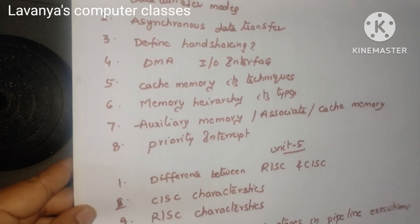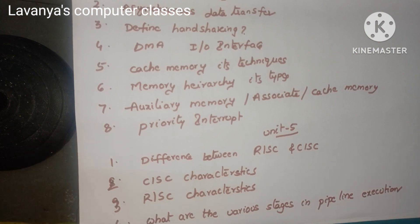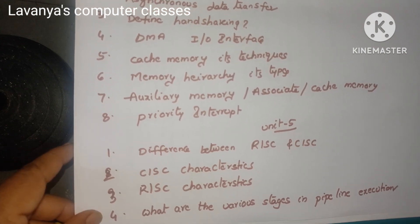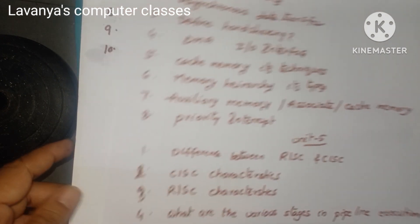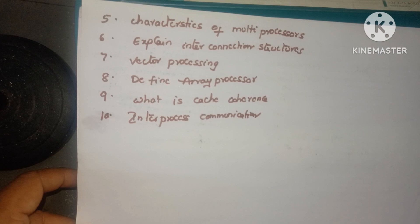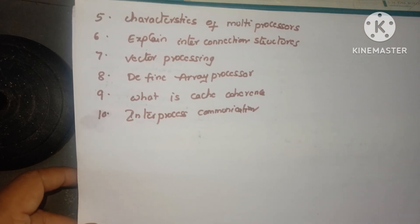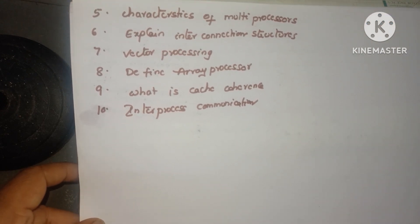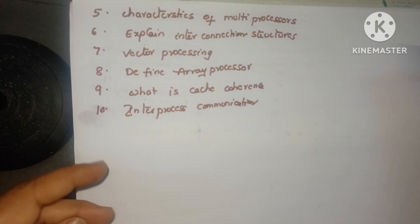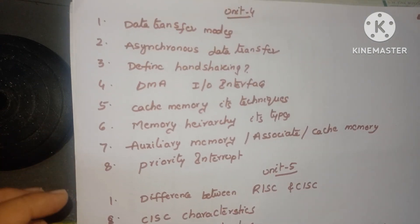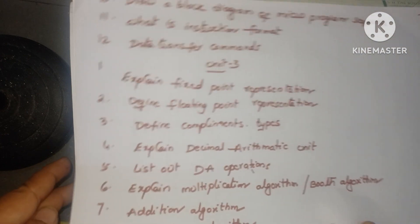Unit 5 questions are: difference between RISC and CISC — definitions, CISC characteristics, RISC characteristics — and what are the various stages in pipeline execution, and explain about pipeline. Those are also covered in Unit 1. Characteristics of multiprocessors. Explain interconnection structure. Concept of array processing, vector processing. Define array processors. What is cache coherence and what is inter-process communication? These are all the short answer and important questions in COA, unit wise.